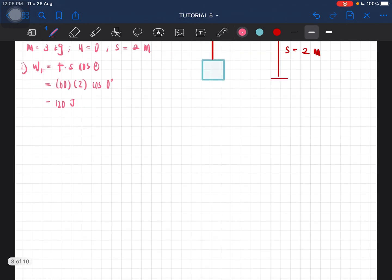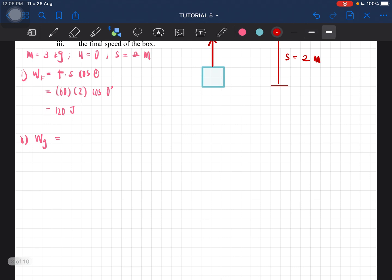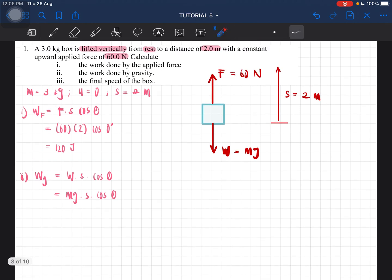Next we have to find the work done by gravity. So by gravity, W_g is equal to weight. We have weight equal to mg. So weight times s times cos theta. In this case now, the angle is 180 degrees.